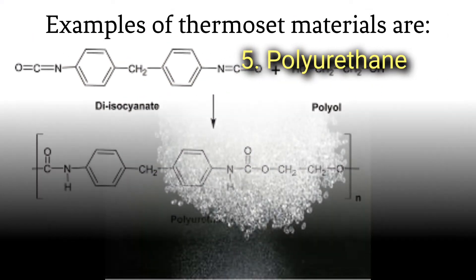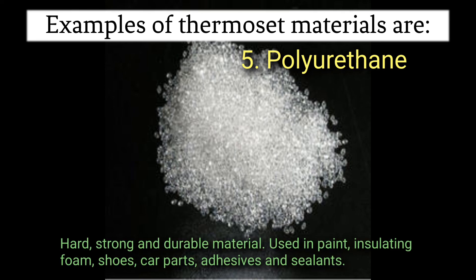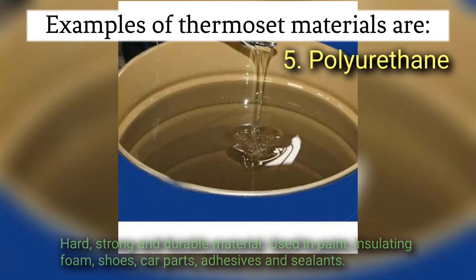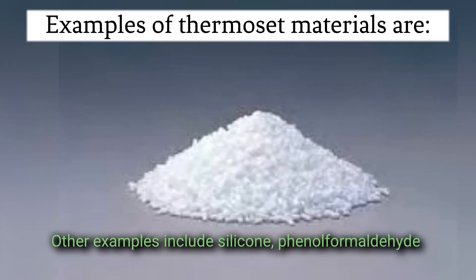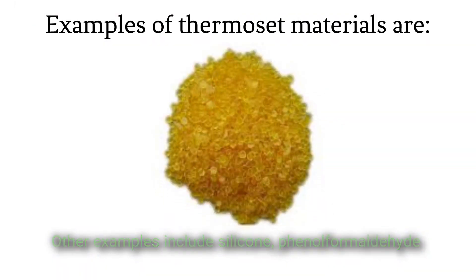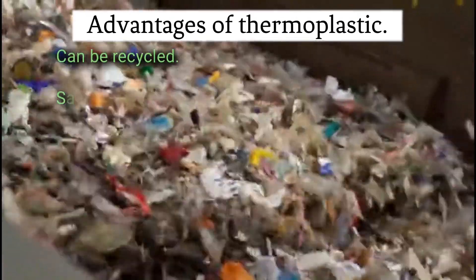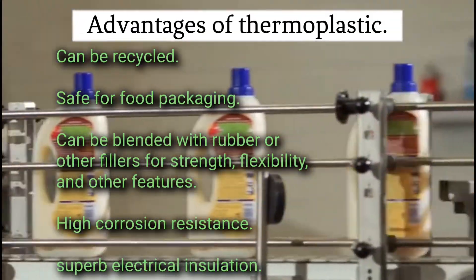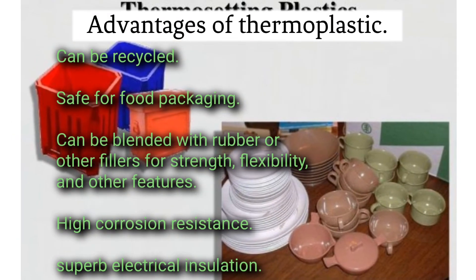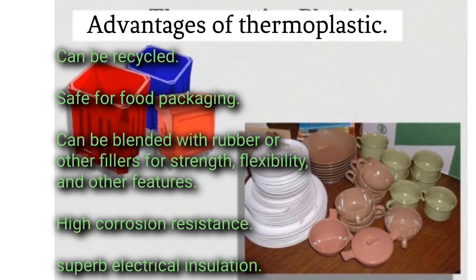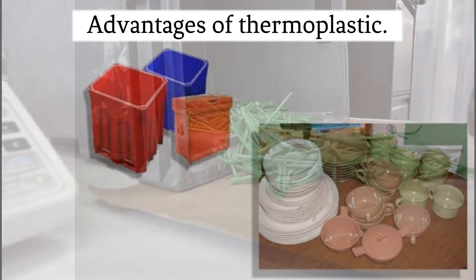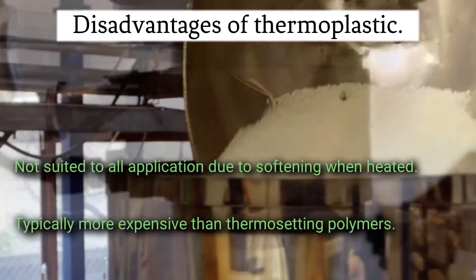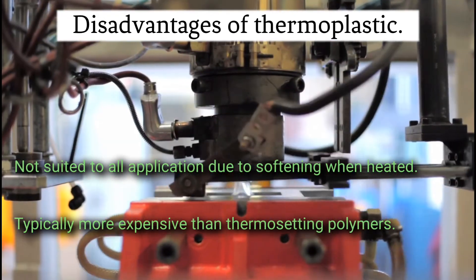Polyurethane - hard, strong, and durable material used in paint, insulating foam, shoes, car parts, adhesives, and sealants. Other examples include silicone, phenol formaldehyde. Advantages of thermoplastic: Can be recycled. Safe for food packaging. Can be blended with rubber or other fillers for strength, flexibility, and other features. High corrosion resistance. Superb electrical insulation. Disadvantages of thermoplastics: Not suited to all applications due to softening when heated. Typically more expensive than thermosetting polymers.